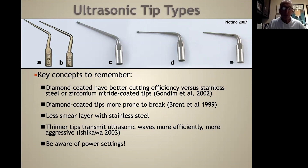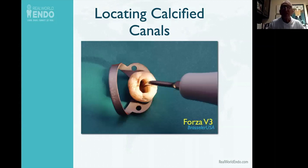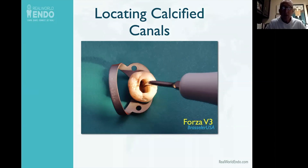We have to be careful of the power settings. In the past, we used a contraangle to gain access and look for canals, and the slow-speed contraangle head obstructs the view of the chamber. Now we're able to see right into the chamber using ultrasonics. Here's a slide showing the Forza V3, which is a Brasseler unit — I think it's very good and it's the one we use. All the ultrasonic instruments on the market do basically the same thing. The main advantage of the Forza V3 is it has an LED light, which gives enhanced illumination.